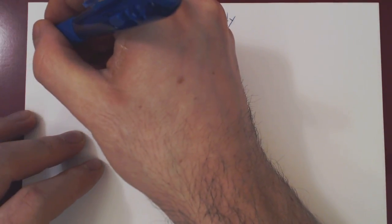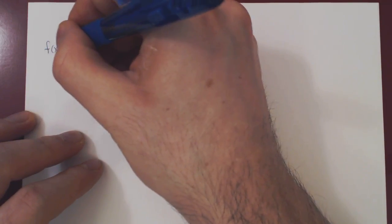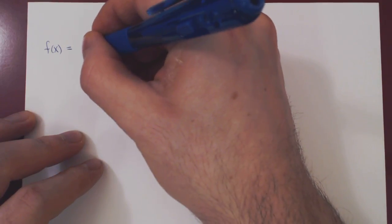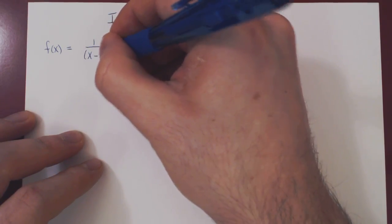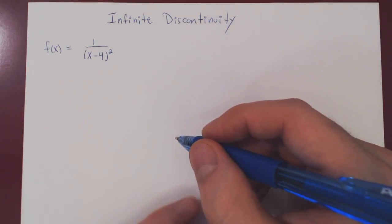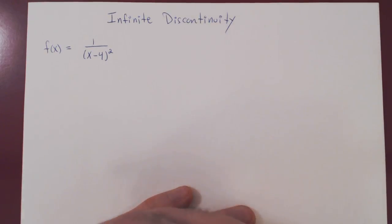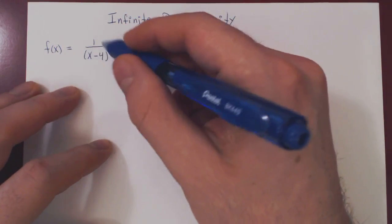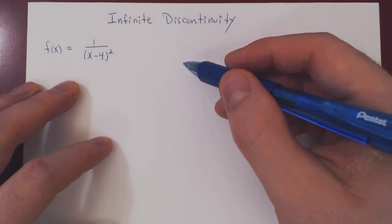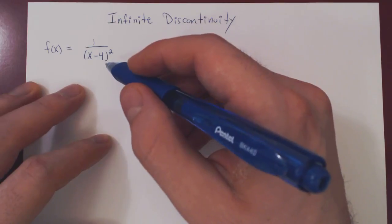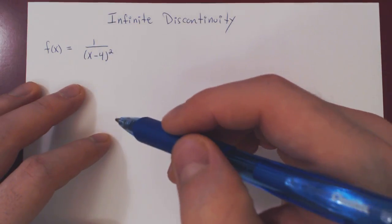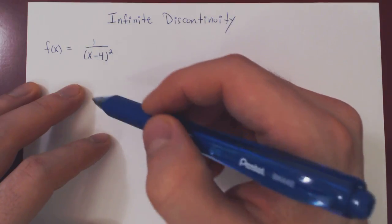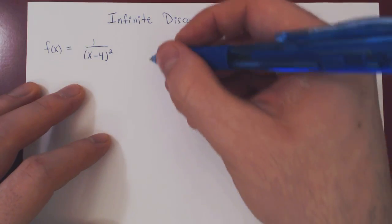Here's the first example. We'll take a very simple rational function: f(x) = 1 over (x minus 4) squared. We ask, where are the possible discontinuities? We know that rational functions are continuous everywhere in their domain, so we simply have to ask where this function could be undefined — that is, where there is a division by 0, which occurs if x minus 4 equals 0, therefore if x equals 4.